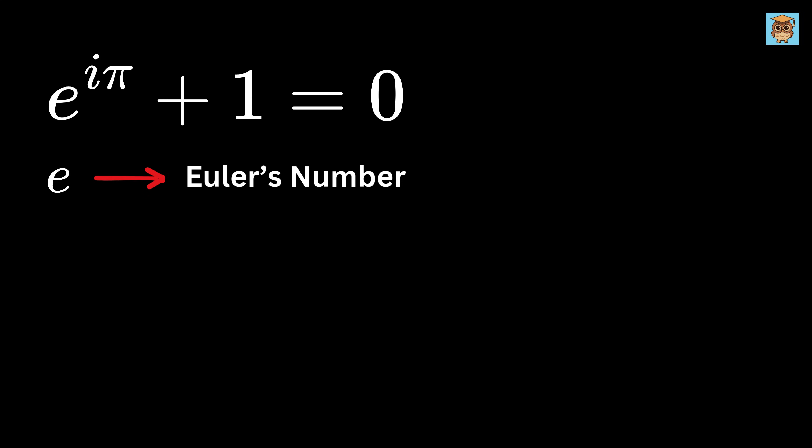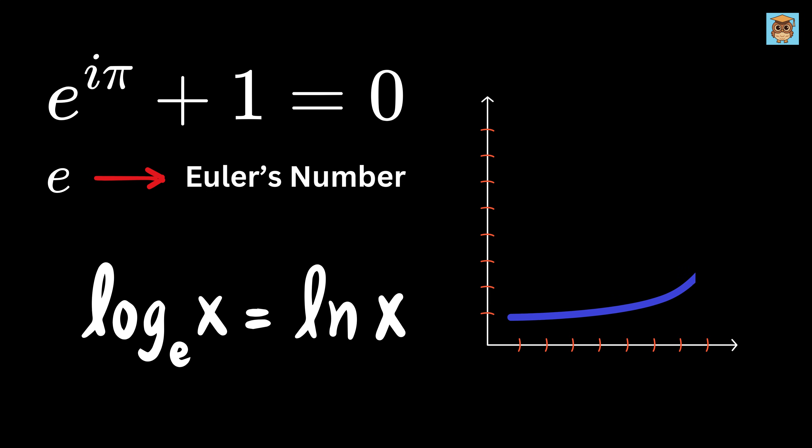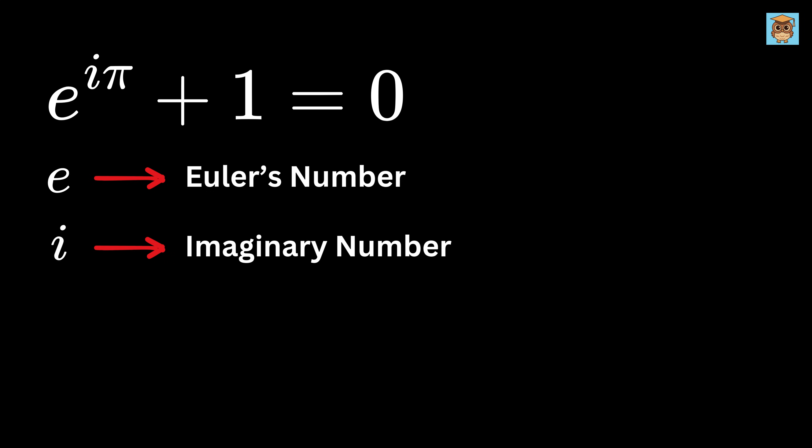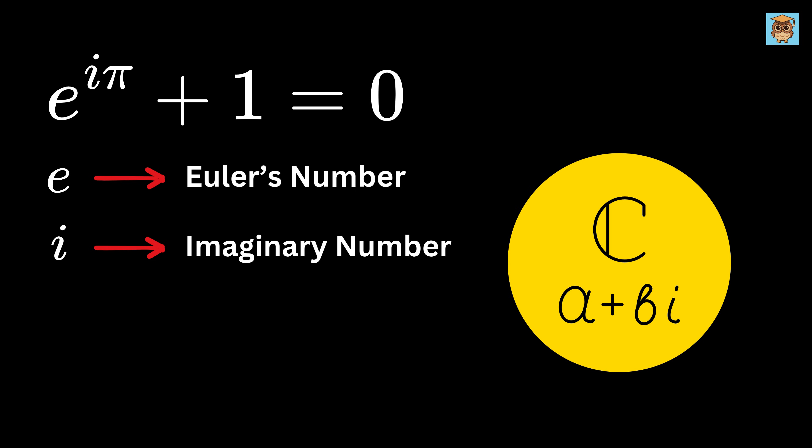e, or Euler's number, the base of natural logarithms, appearing in growth and decay processes. i, the imaginary unit, the foundation of complex numbers, defined as the square root of minus 1, or i² equals negative 1.